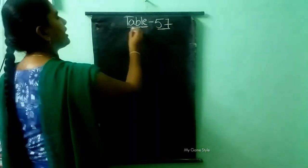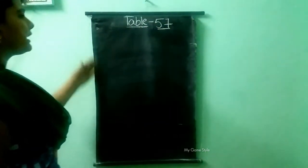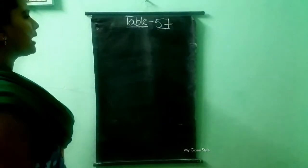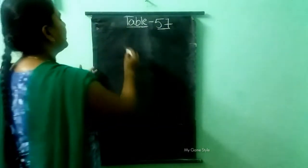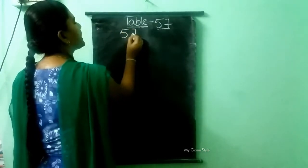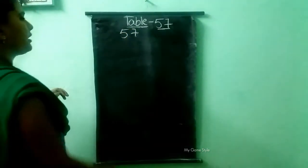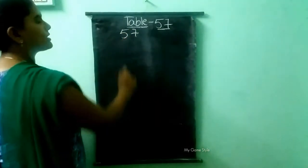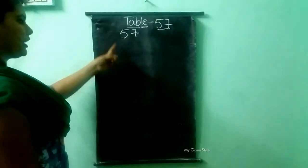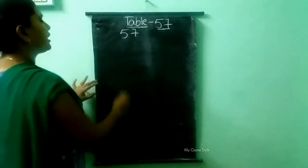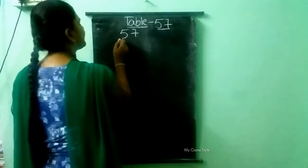57 table. So I am writing the 57 table here. In 57, the digit 5 is there, so we need to write the 5 table first.